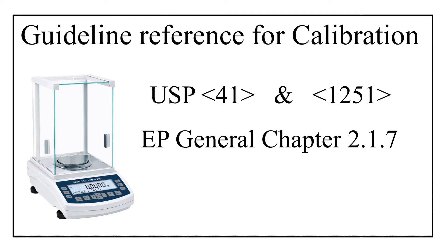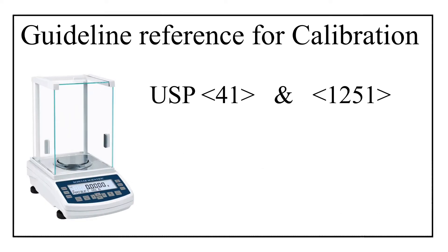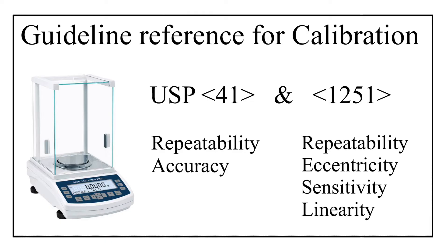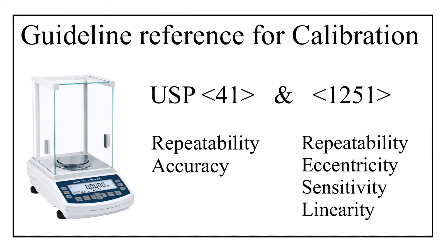If you read USP general chapter number 41 and 1251, you will find that some calibration parameters are covered in chapter 41 and others in chapter 1251. Specifically, repeatability and accuracy are given in general chapter 41, whereas sensitivity, linearity, eccentricity, and repeatability are covered in general chapter 1251. Note that the repeatability test appears in both general chapters.